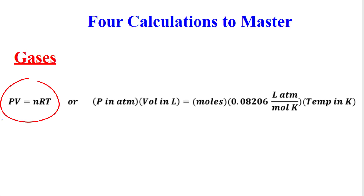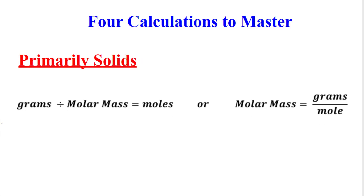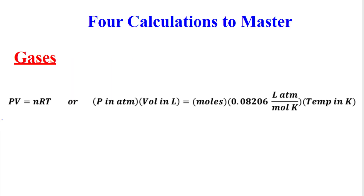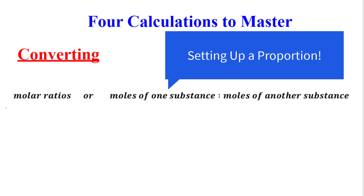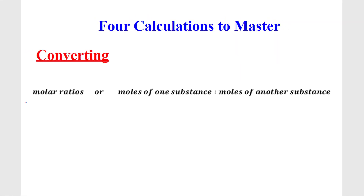For gases, you're going to use PV=nRT. The pressure times the volume equals moles of the gas times R, which is 0.08206, times the temperature in Kelvin, and that's going to get you into moles. You can see that in every calculation — whether it's solids, solutions, or gases — we're going to try to get into moles. Then in the fourth calculation you want to be able to convert, which is simply setting up a proportion, a molar ratio: moles of one substance is proportional to moles of another substance.